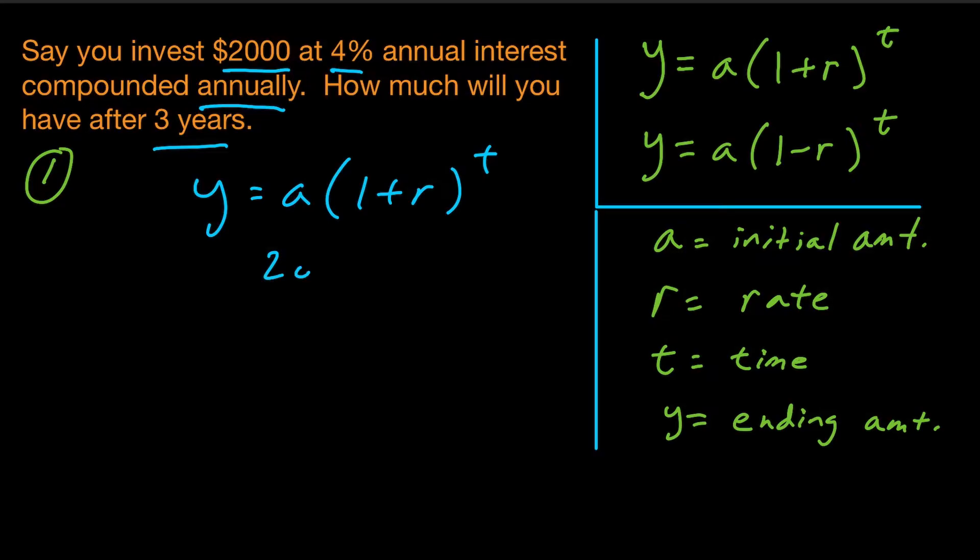Our starting amount, a, is 2,000. And our rate of growth is 4%. Now remember, 4% to convert that to a decimal, you move the decimal two places to the left. So that's going to end up being 0.04. And the time, that's in this case, three years.